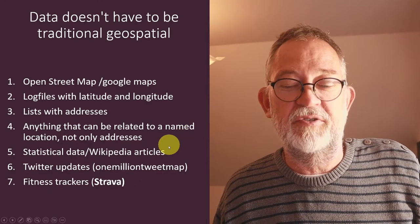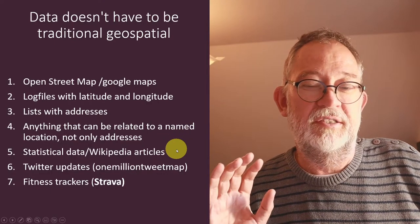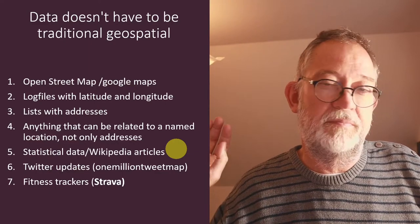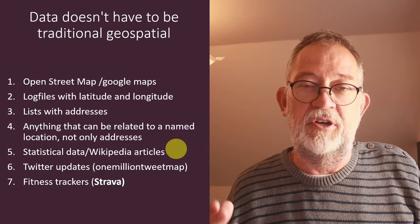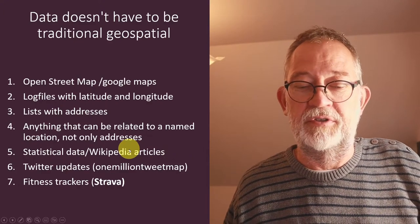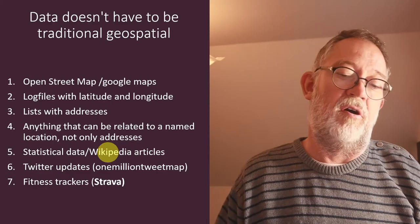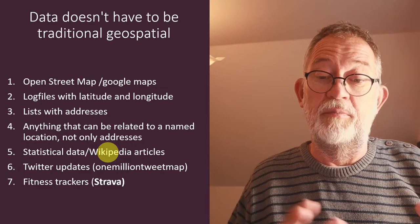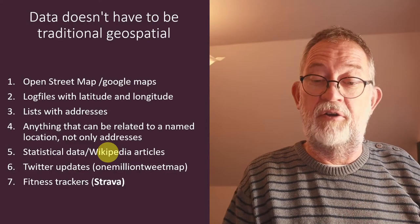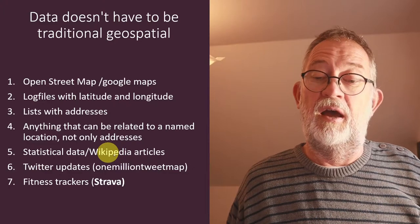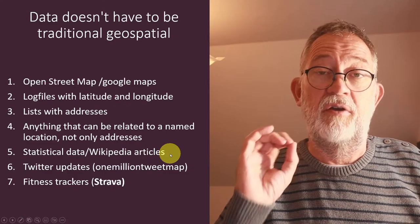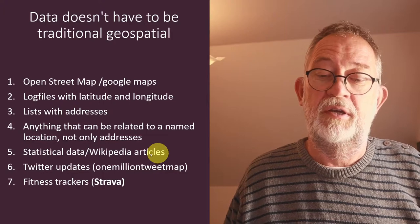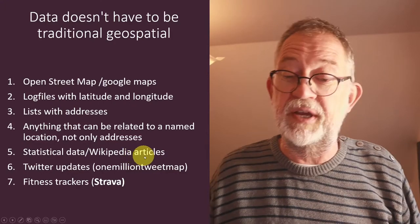This also goes a bit further because there's lots of statistical data and Wikipedia articles and UN datasets that contain names of locations. Many of those statistical data will be municipalities or survey tracks or whatever it's called in your country, where we have statistical data bound within some spatial limits. Wikipedia also has lots of articles relating to specific places, and again those place names can be geocoded. It's even more possible to do it within Wikipedia's framework.